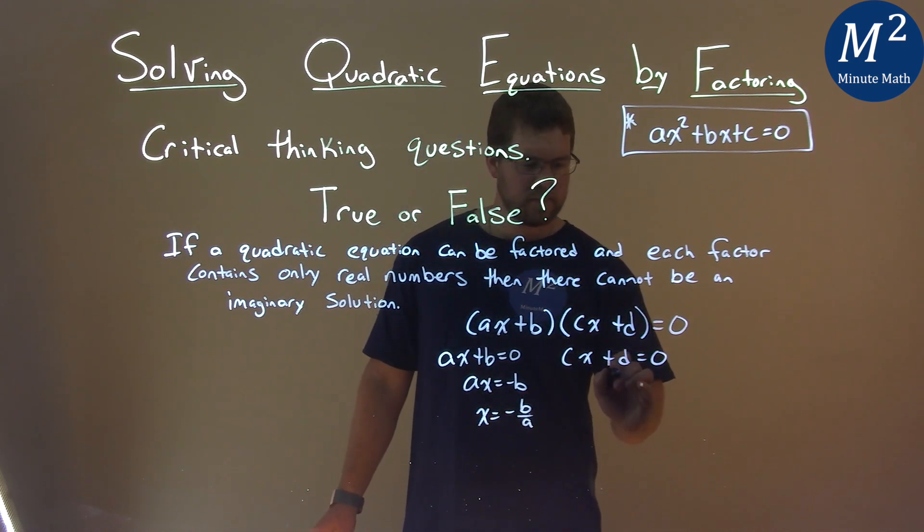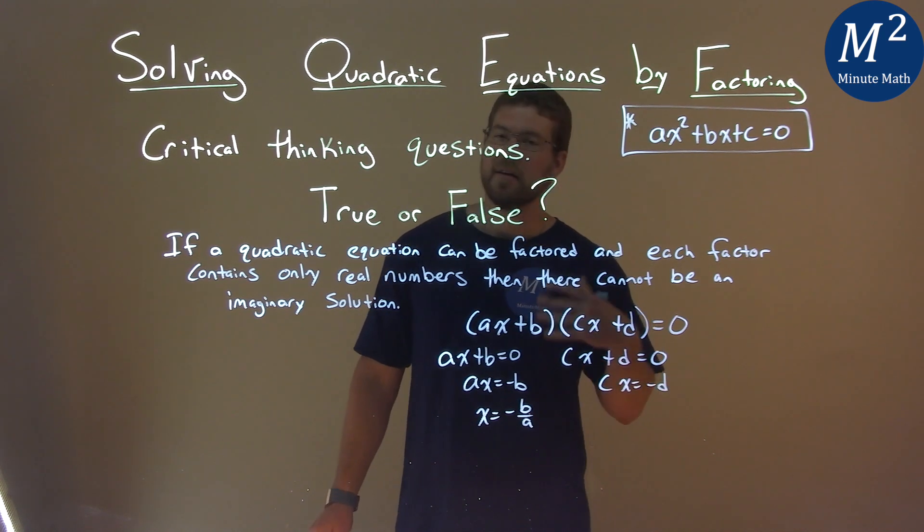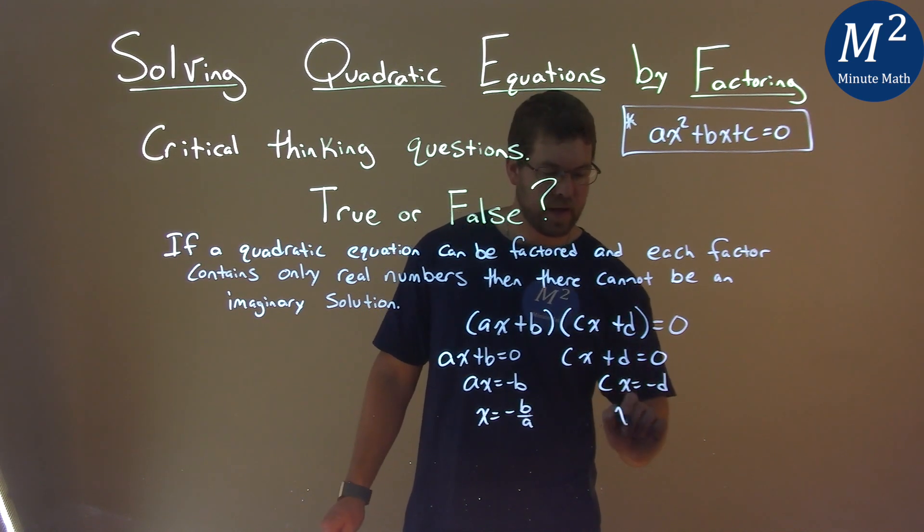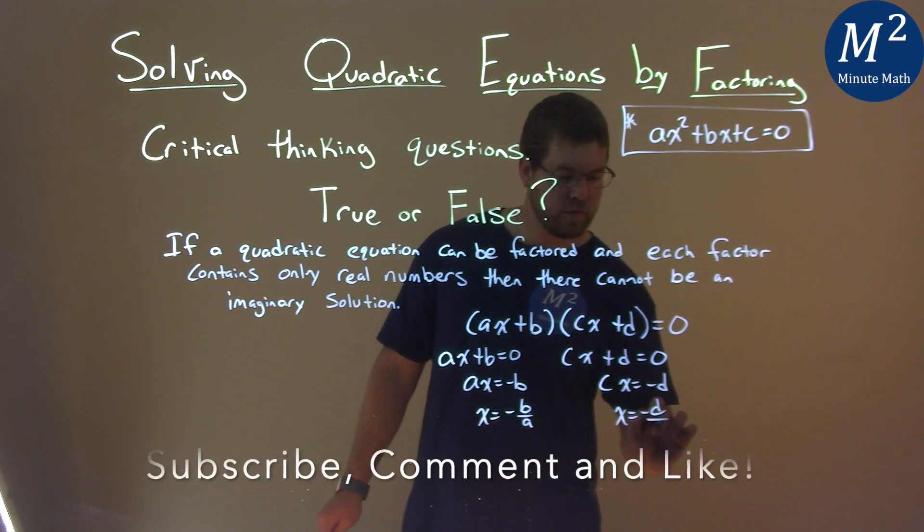Same thing here, subtract D to both sides, CX equals negative D, divide both sides by C, and X equals negative D over C.